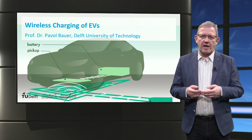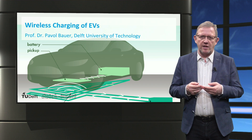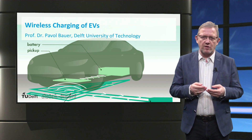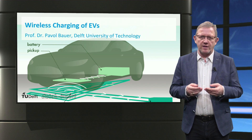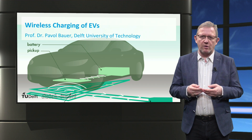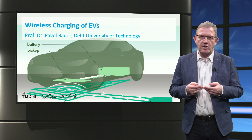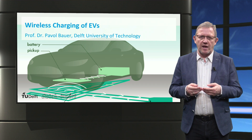To wrap up this lecture: wireless charging of electric vehicles is a convenient technology. In inductive power transfer, two charging pads — one on the ground and one underneath the vehicle — are used to exchange power using magnetic fields. Power is exchanged at high frequencies on the order of 85 kHz, and power electronic converters are used to facilitate this. An extension of wireless charging called on-road charging allows electric vehicles to be charged while they are driving, by placing charging pads underneath the roads.